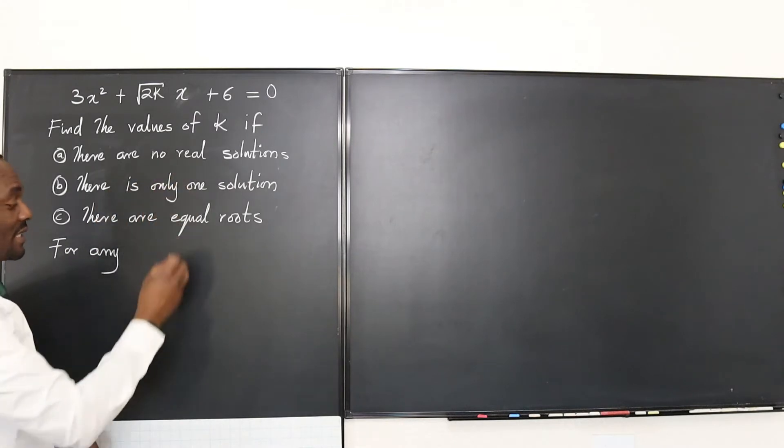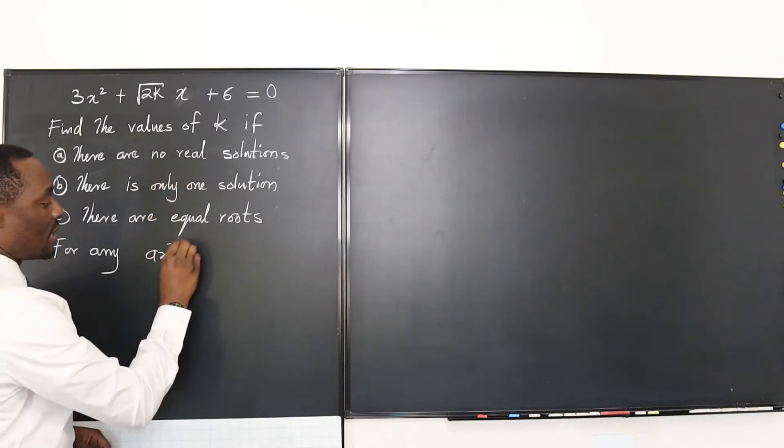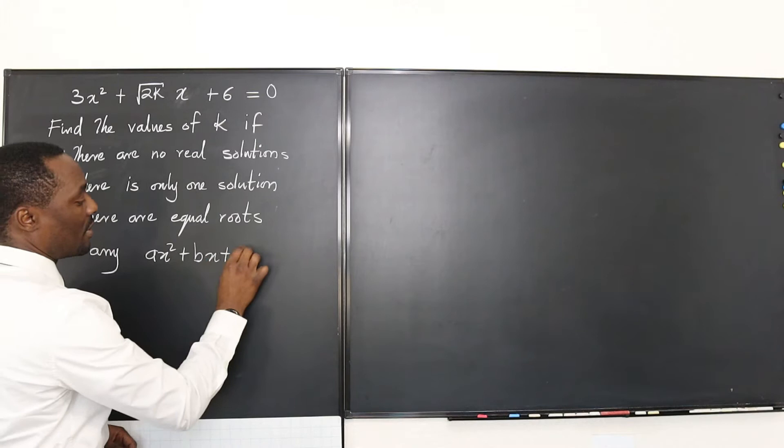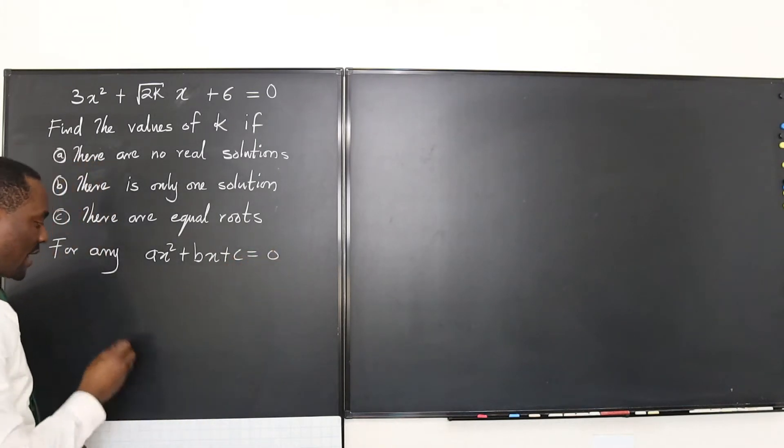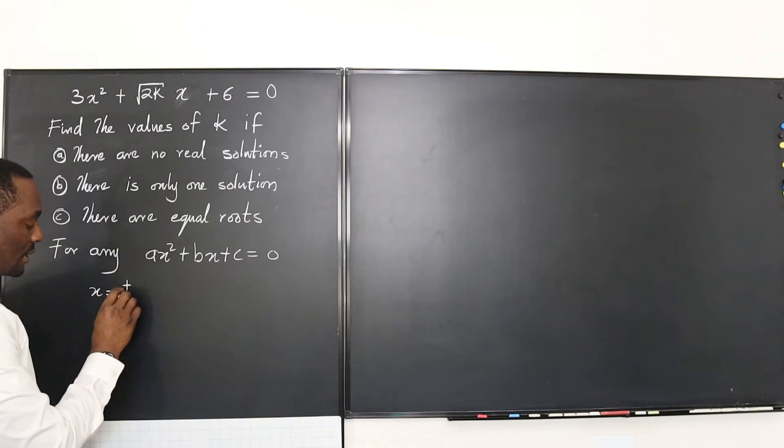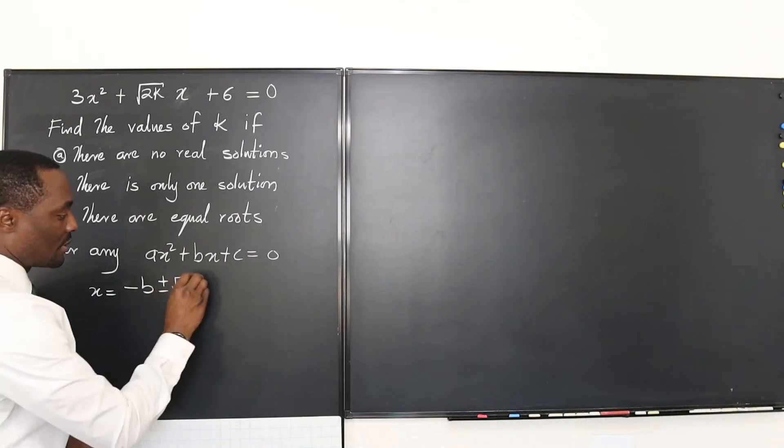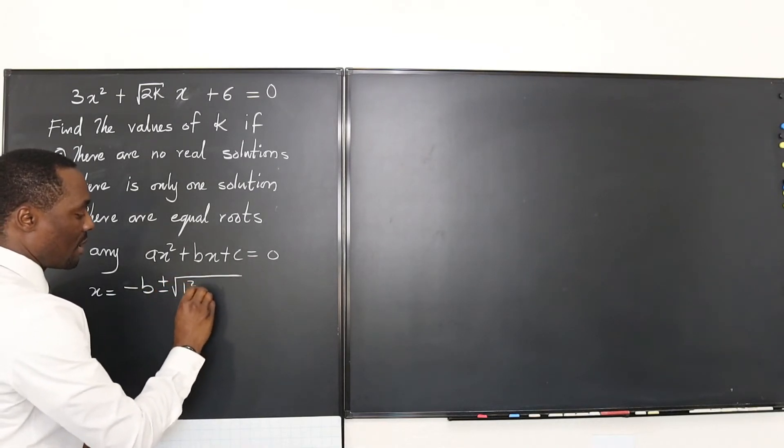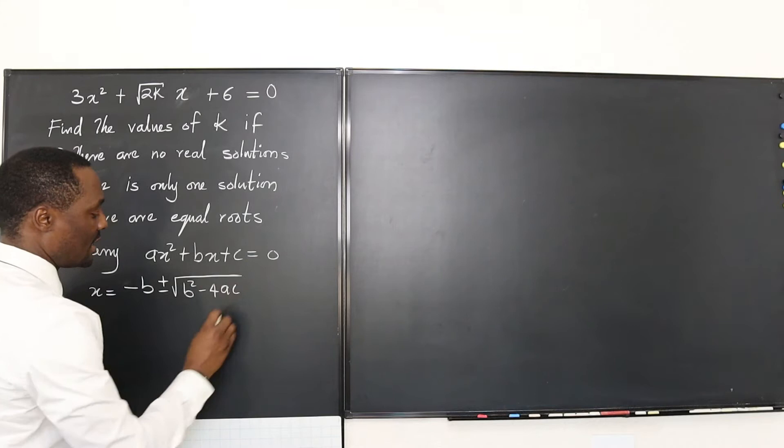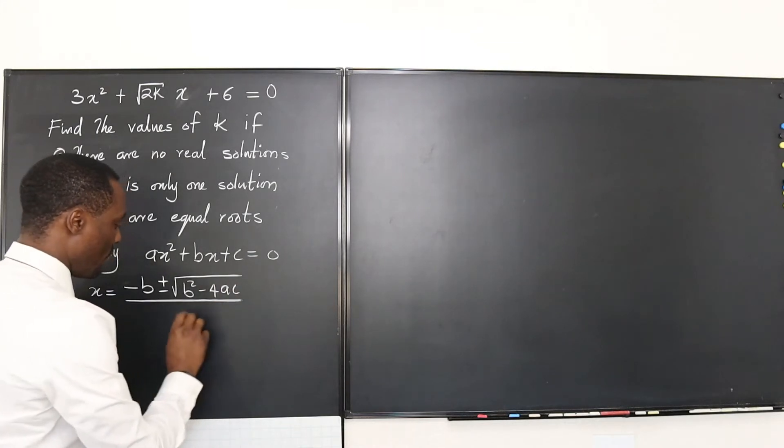So for any quadratic equation, ax squared plus bx plus c equals zero, we can tell that x is equal to minus b plus or minus the square root of b squared minus 4ac over 2a.